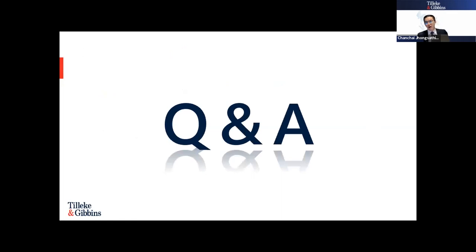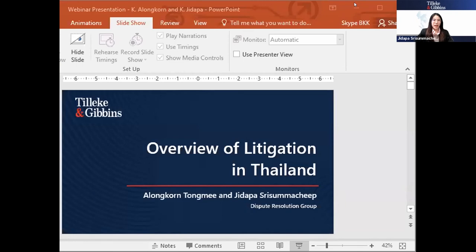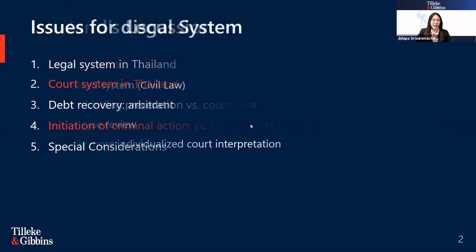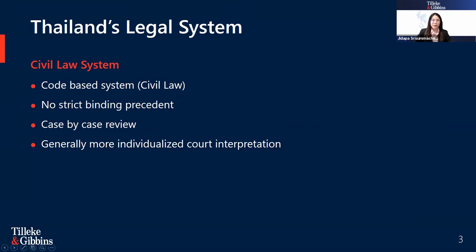We will now move to the dispute resolution team for their presentation. They will cover five issues: first, the legal system in Thailand; second, the court system in Thailand; third, recovery application versus court case; fourth, initiation of criminal action — police versus court; and fifth, special litigation considerations. The Thai legal system is a civil law or code-based system. Judicial decisions are not law because they apply to an individual case; however, Thailand's legal system is also influenced by the common law tradition.